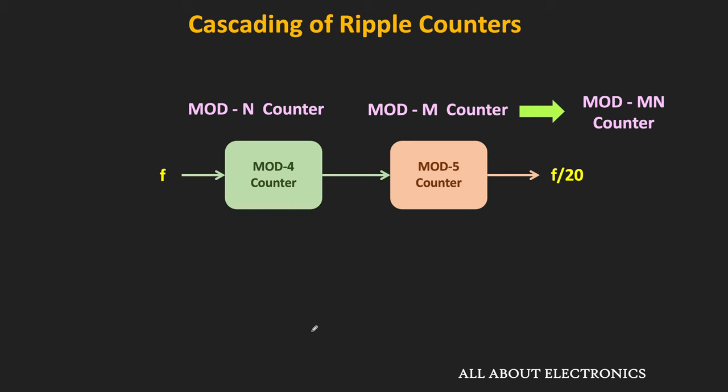So whether we connect the mod 4 counter first followed by mod 5, or mod 5 first followed by mod 4, we get a mod 20 counter in both cases. However, the duty cycle of the output waveform can be different, and depending on the order in which these counters are connected, we also get a different output sequence. Let us see this in the simulation.